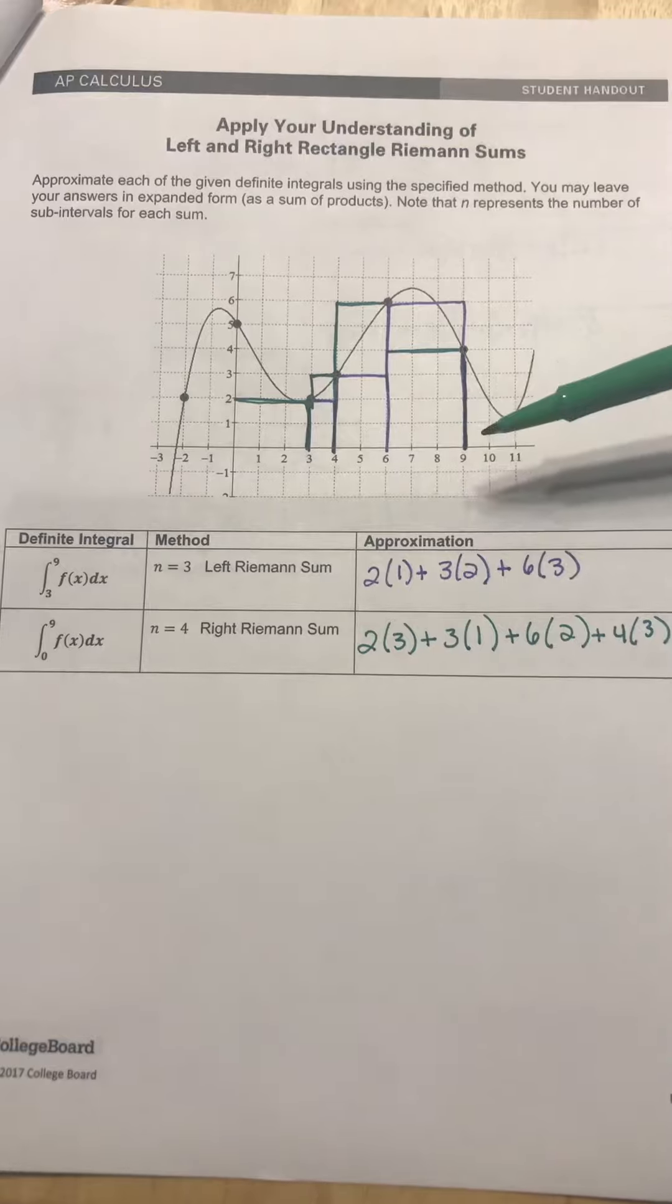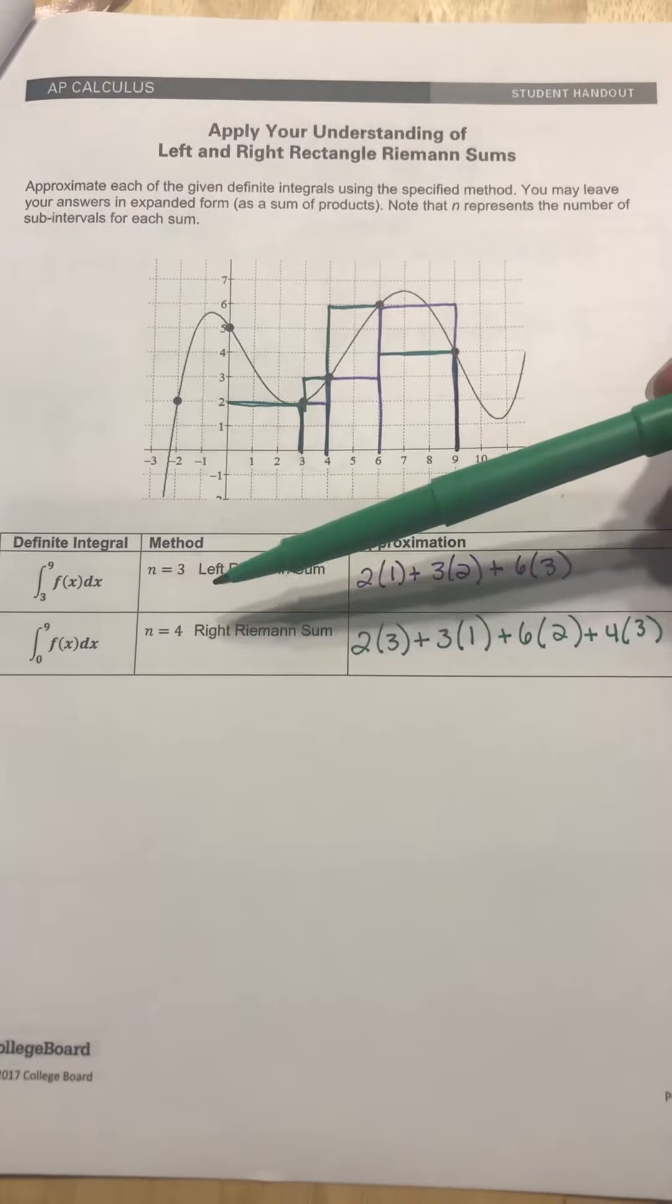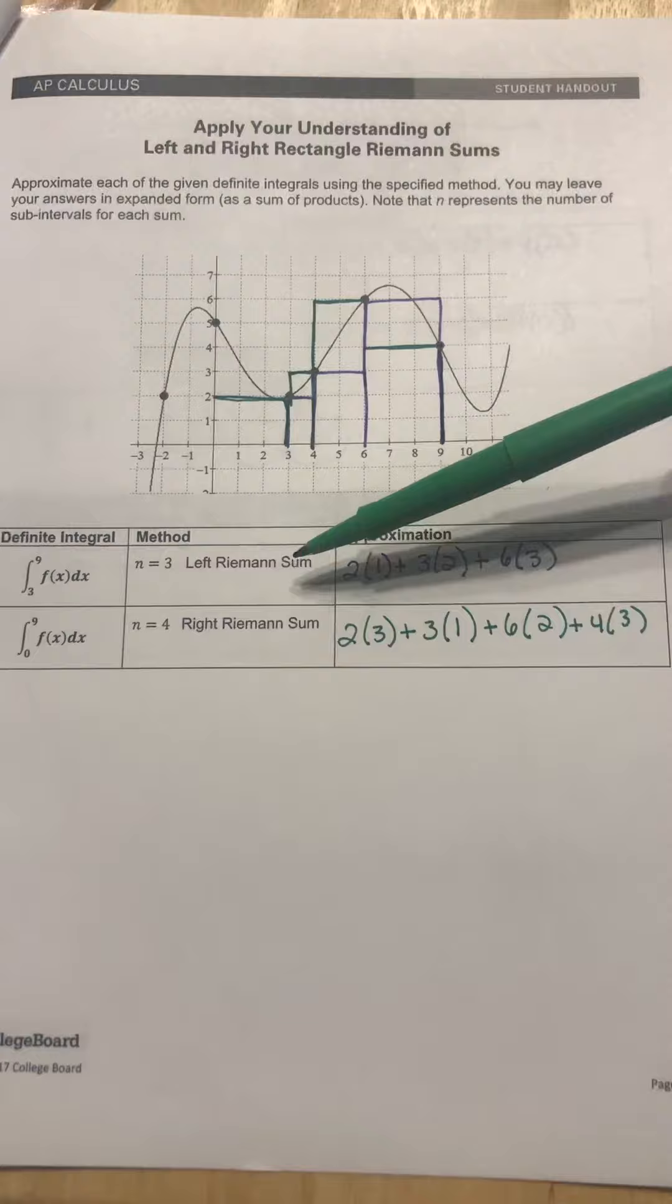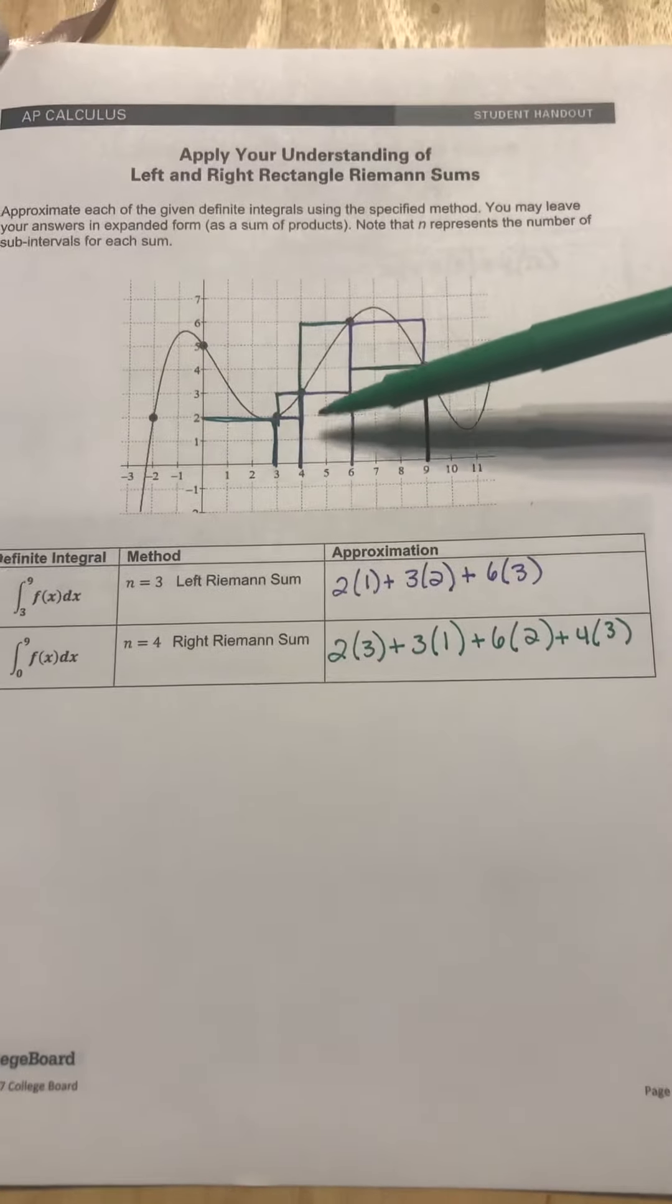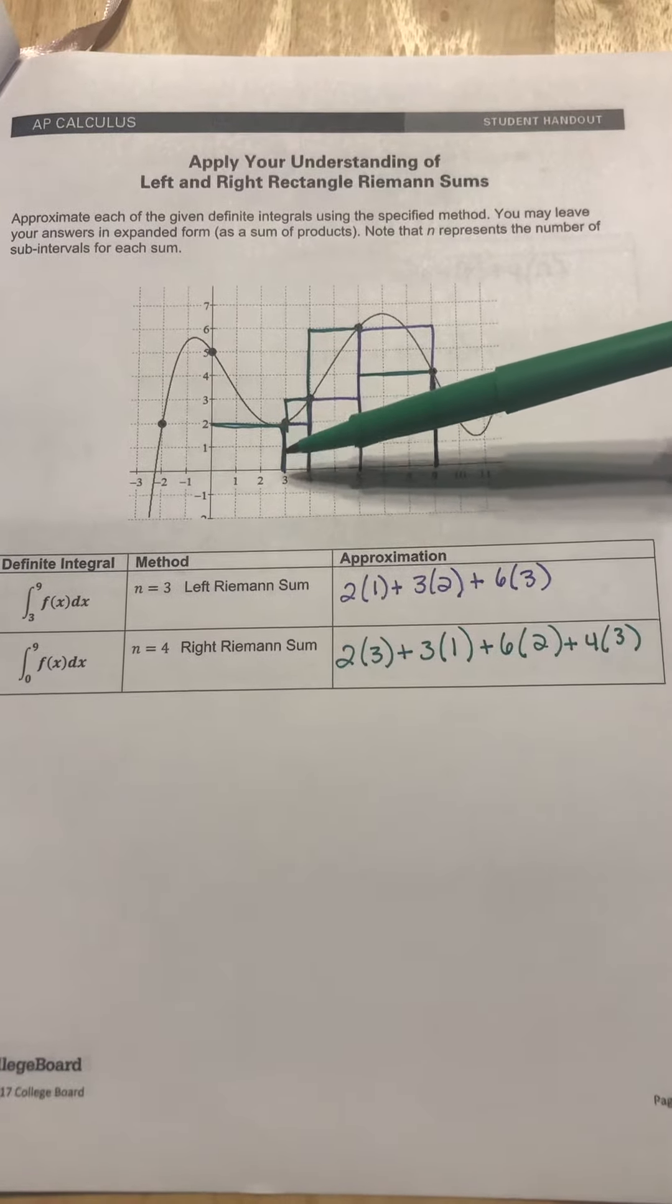So three to nine. They want you to do three sub-intervals and they want you to use left Riemann sums, and again they're trying not to get you to do equal sub-intervals. Okay, so we're doing three of them and we're going from three to nine.